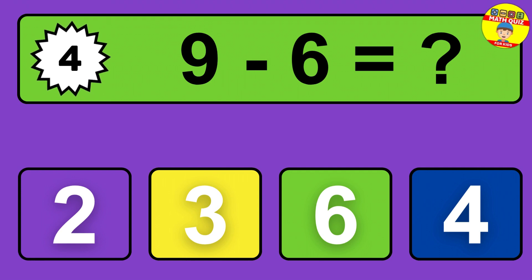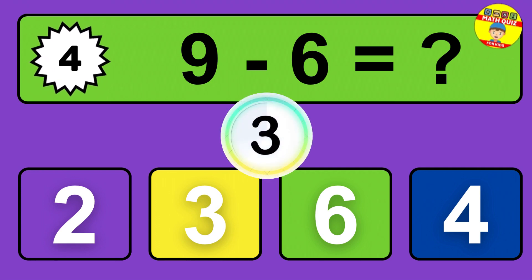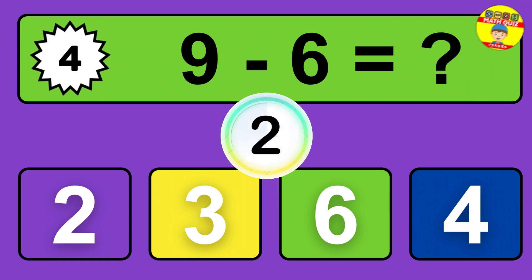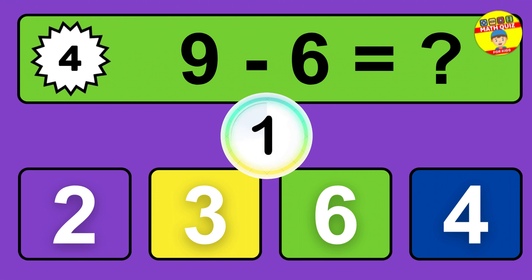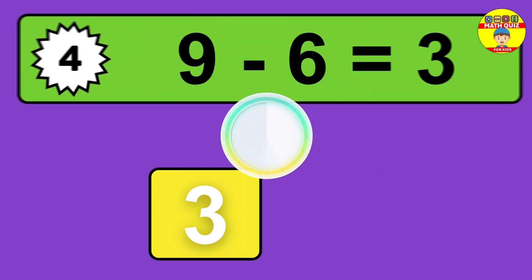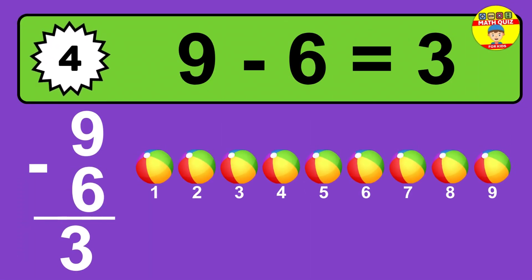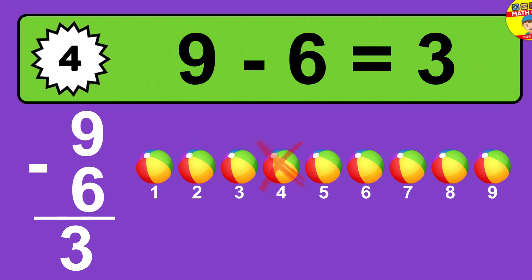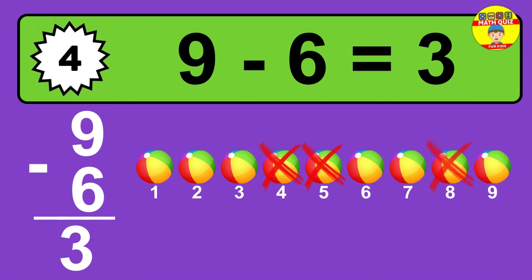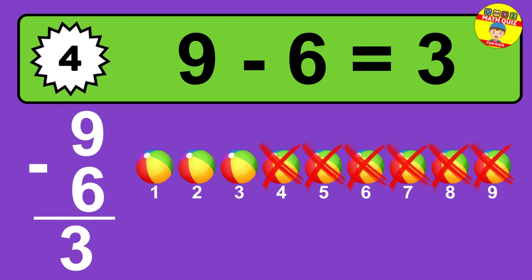Question four: nine minus six equals what? The answer is nine minus six is three. Let's count it: one, two, three.